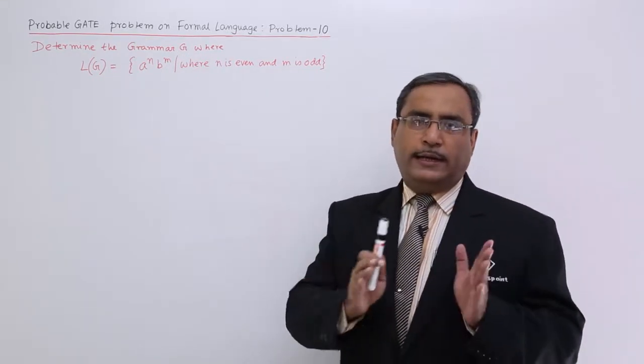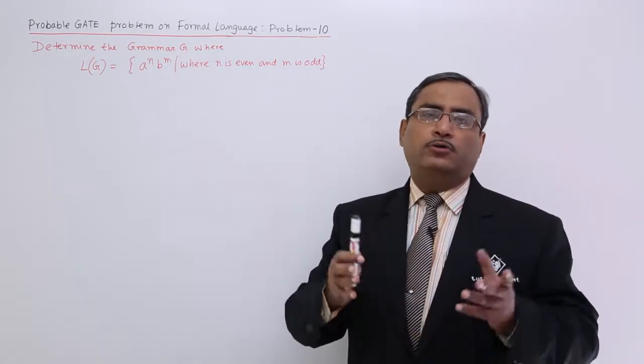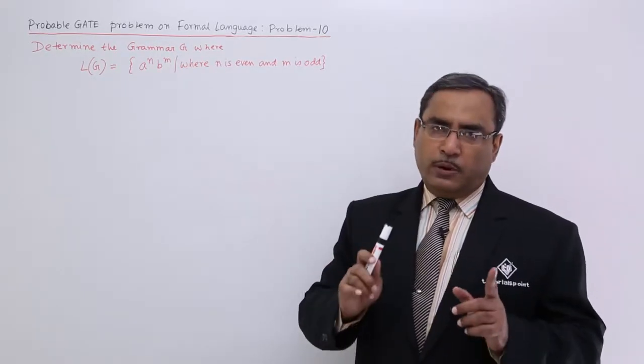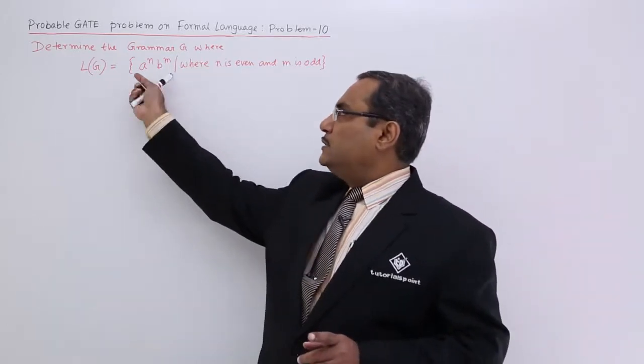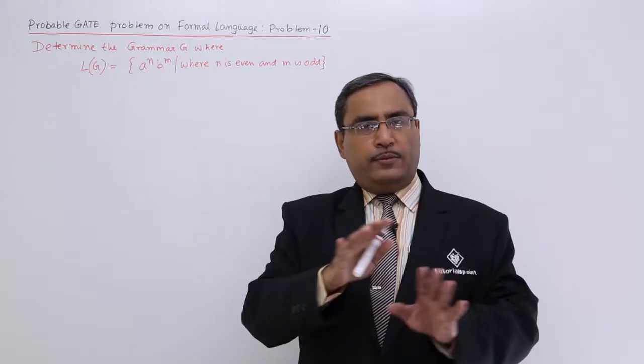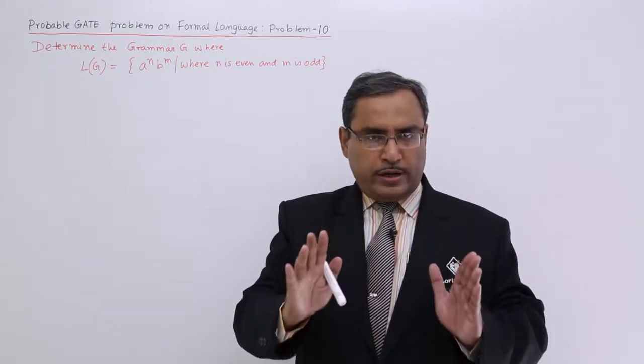They have been told that whether n is greater than m or equal to or lesser than, that is not the constraint. We are having two constraints. Constraint number one is that a will be clustered and then b will be clustered. There will be no mixing of a and b.